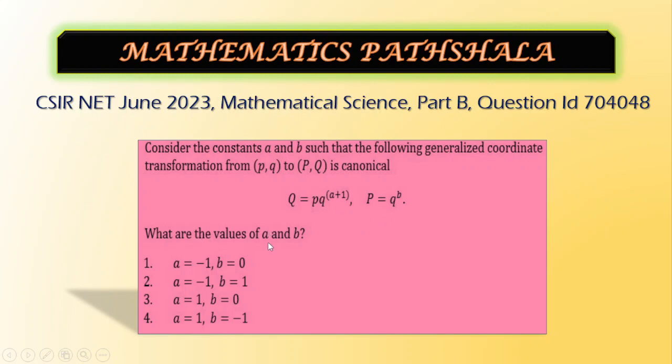What are the values of A and B? For what values of A and B will this transformation be canonical? We have to find.